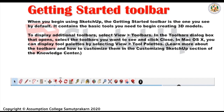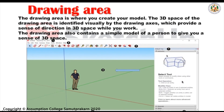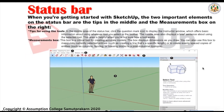In Mac OS X, you can display tool palettes by selecting View > Tool Palettes. The drawing area is where you create your model. The 3D space of the drawing area is identified visually by the drawing axes, which provide a sense of direction in 3D space while you work. The drawing area also contains a simple model of a person to give you a sense of 3D space. When getting started with SketchUp, the two important elements on the status bar are the tips in the middle and the measurements box on the right.